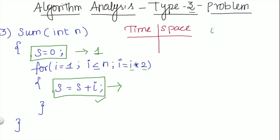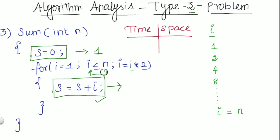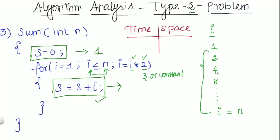For each iteration, I is multiplied by 2. Initially, the value of I is 1, then it becomes 2, then 4, then 8. This pattern continues until I equals n, because that is our for-loop condition. When the loop variable is multiplied by 2, this is the pattern for I.